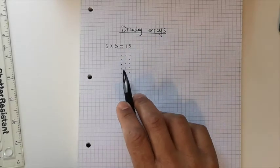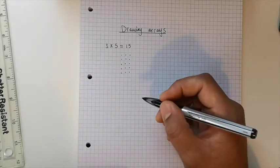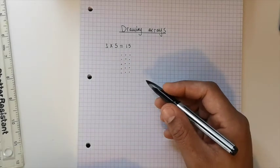Let's see again, me counting in fives: five, ten, fifteen. That's why we can use arrays to help us answer multiplication sentences much more quickly and efficiently.